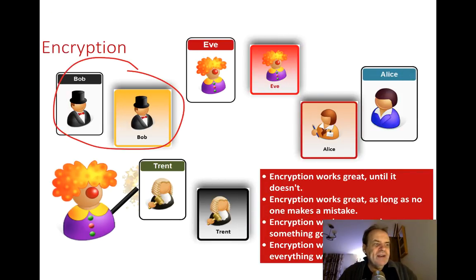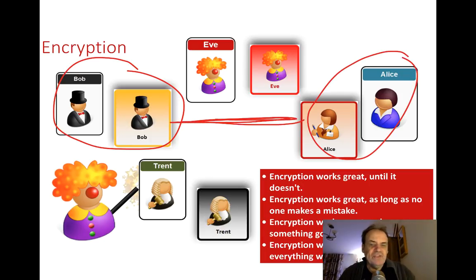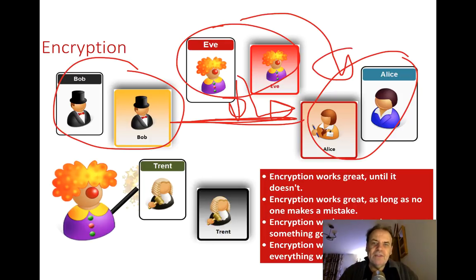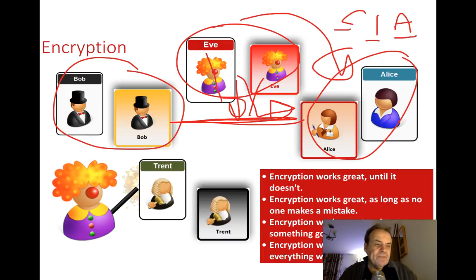Our task is to make sure that Bob and Alice can communicate and store data securely, and for Eve not to get involved. Eve shouldn't be able to listen to their communications, change them, or spoof Bob's identity to Alice. This gives us CIA: confidentiality (secrecy), integrity (ensuring data doesn't change), and availability (ensuring data is accessible).